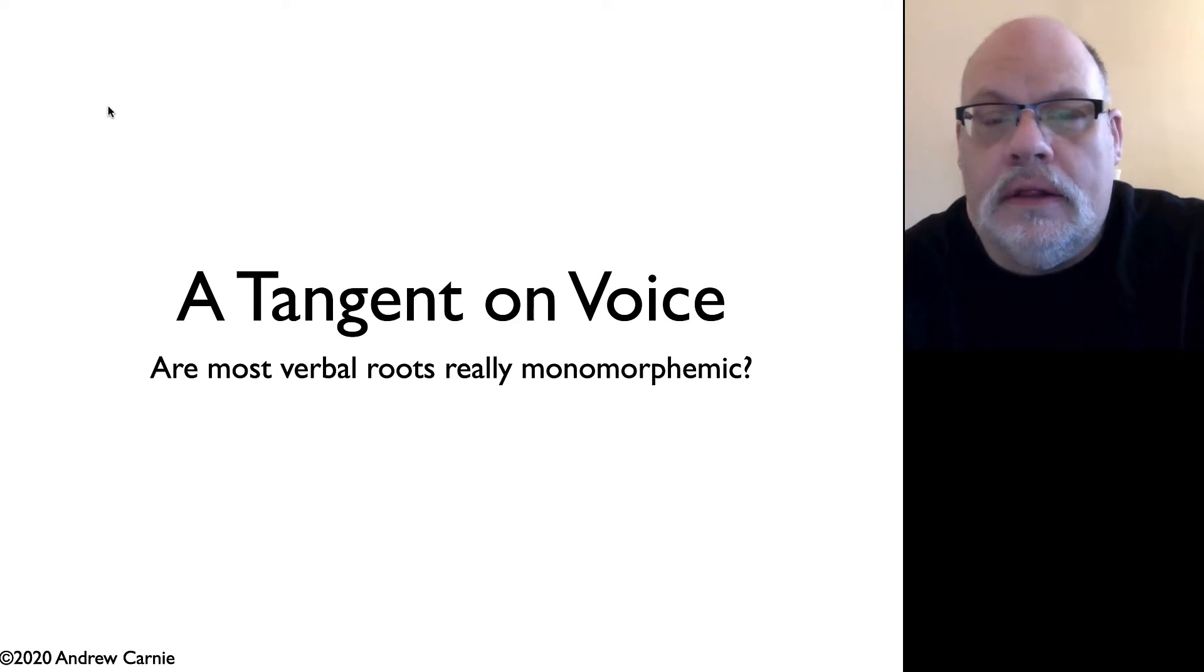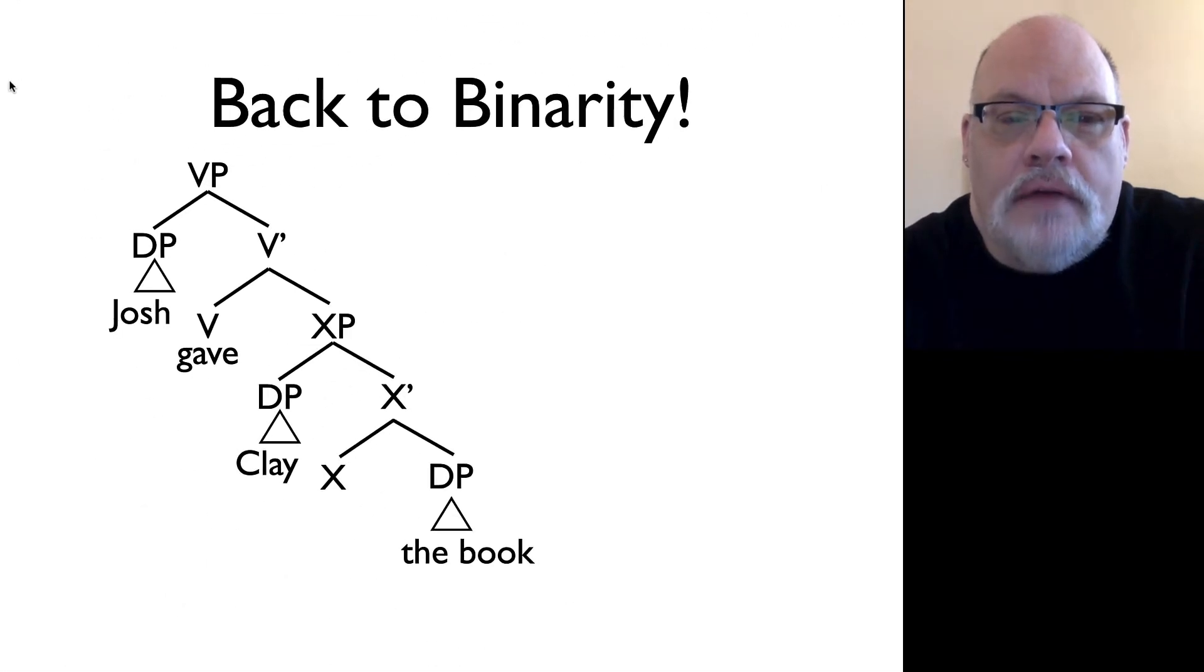In this unit, we're going to do a little tangent on voice. Our goal is to explain double object constructions, but that involves looking a little bit at how active voice is realized in the world's languages. In the previous video, we were talking about how double object constructions seem to have a constituent structure, where the first DP after the verb, double object verb or ditransitive verb, seemed to c-command the second DP.